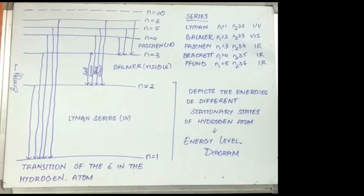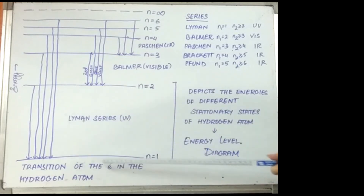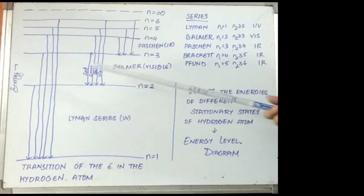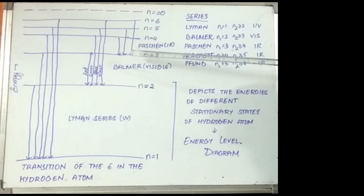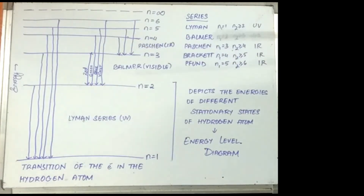The spectral lines can be represented in the form of an energy level diagram. All the transitions from n greater than or equal to 2 taking place to n equal to 1 constitute the Lyman series. The ones taking place to n equal to 2 constitute Balmer. The ones taking place to n equal to 3 are Paschen, to n equal to 4 Brackett, and n equal to 5 Pfund. These are all known as the spectral series.